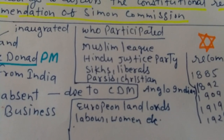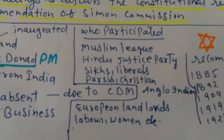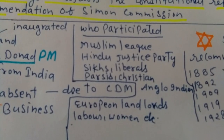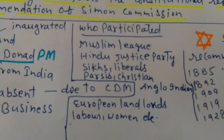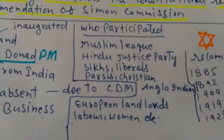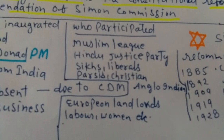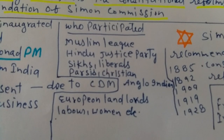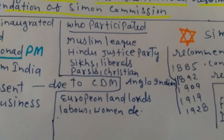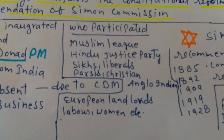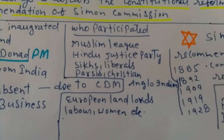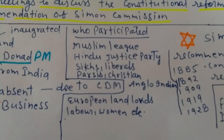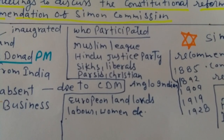The groups that participated in the First Roundtable Conference included the Muslim League, Hindu Justice Party, Sikhs, Liberals, Parsis, Christians, Anglo-Indians, Europeans, landlords, laborers, women, and people from the depressed class who were facing disturbances in the country. So all these groups participated.